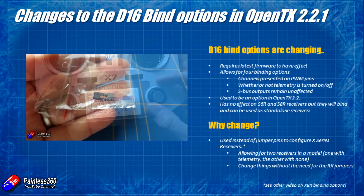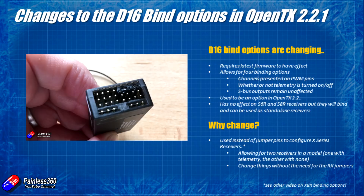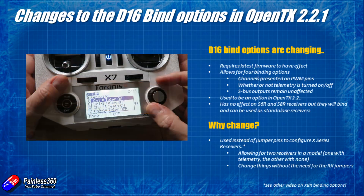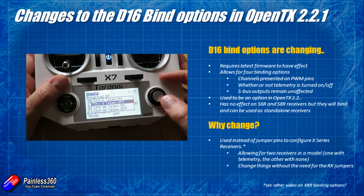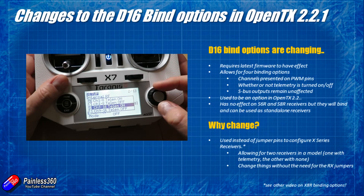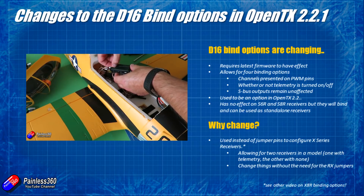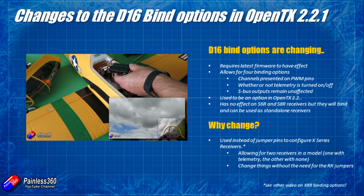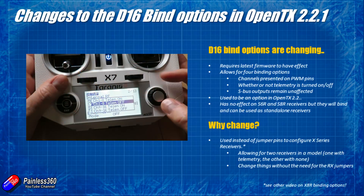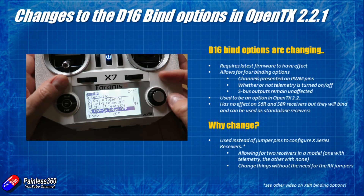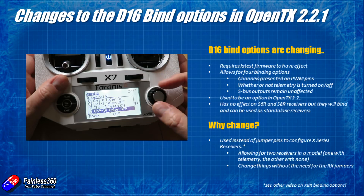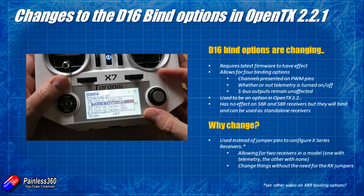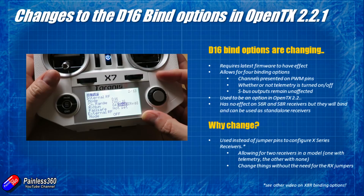All it's doing is moving those little hardware jumper settings you had to do on X-series receivers to turn telemetry on or off or select different pins — I'll link to the video where I covered that in more detail. Rather than doing it on the receiver it's now available in the radio, so if you change your mind or quickly want to add a second receiver for additional PWM controls for servos, gimbals, gear, flaps, air brakes, or scale detail it's going to be a lot easier. If you just want a standard setup, select channels 1 to 8 with telemetry and you'll get the default settings you've been using on receivers like the X8R.